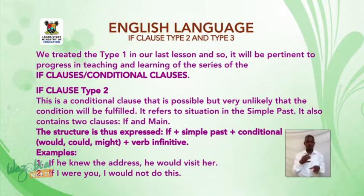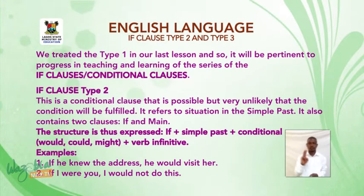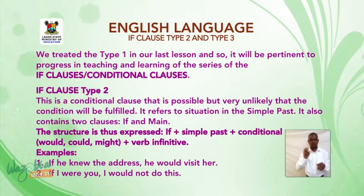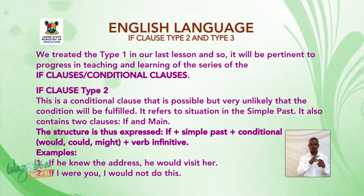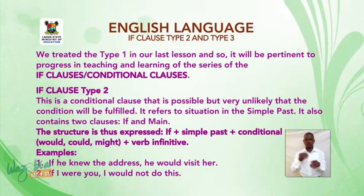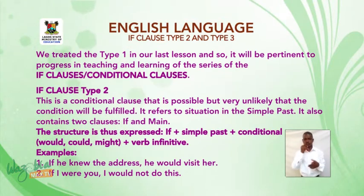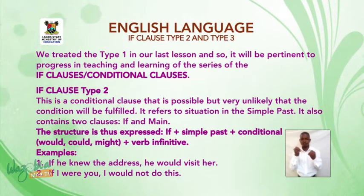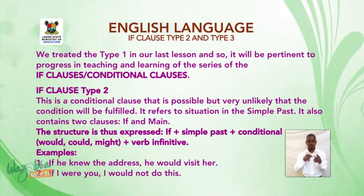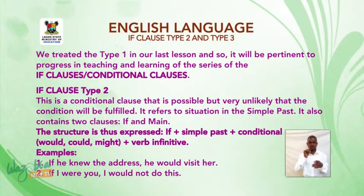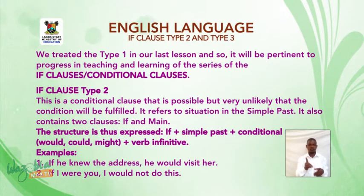Now we take if clause type 2. This is a conditional clause that is possible but very unlikely that the condition will be fulfilled. It refers to a situation in the simple past. It also contains two clauses: if and main. The structure is thus expressed: if plus simple past, plus conditional — would, could, might — plus verb infinitive.